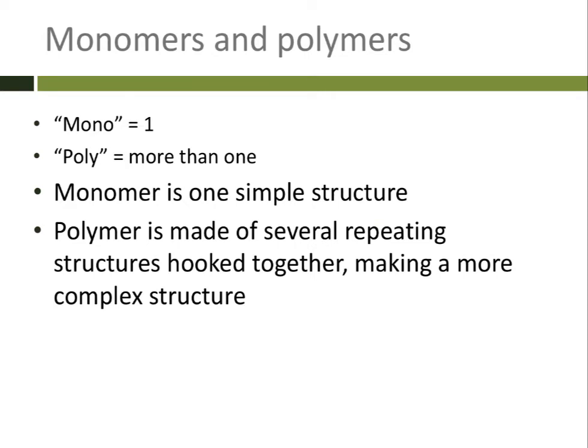So a monomer is just one simple structure. A polymer is made up of several of those structures. We call them subunits, and we hook them together to make a more complex structure.